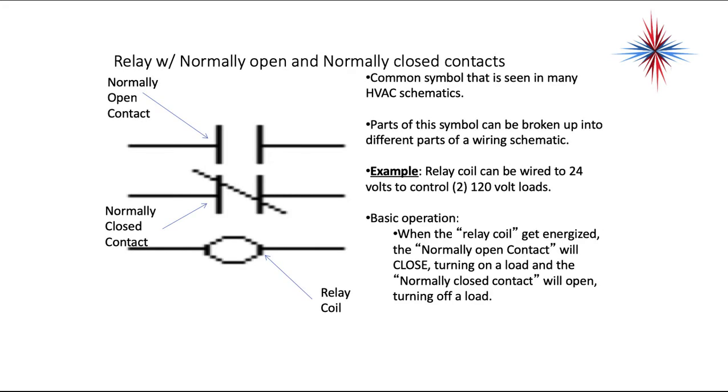This is just one example of a symbol. We have a relay with a normally open and normally closed contacts. This is a common symbol that's seen in many HVAC schematics. Parts of this symbol can be broken up into different parts of a wiring schematic. For example, a relay coil can be wired to 24 volts to control two 120 volt loads.